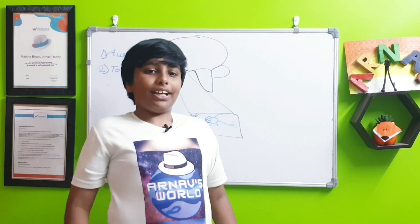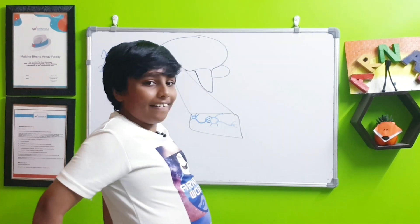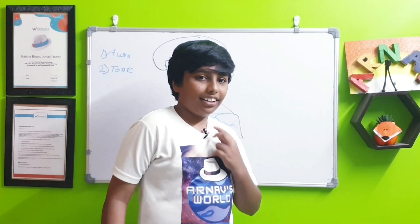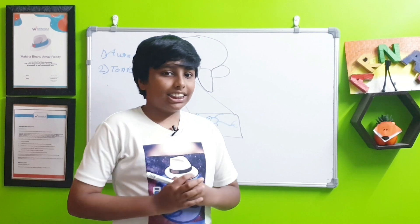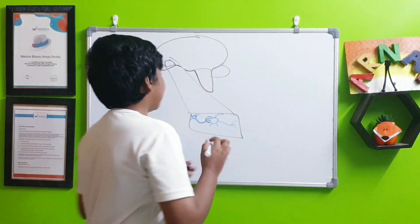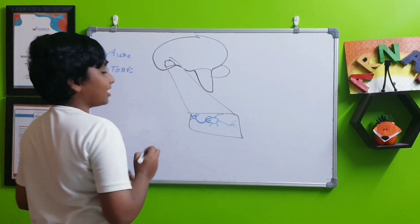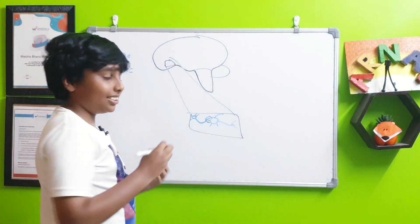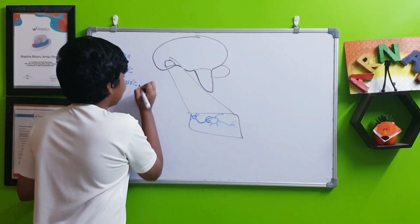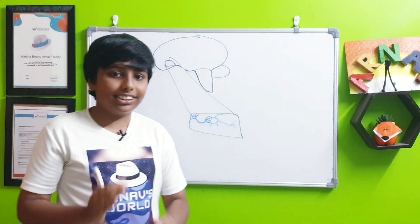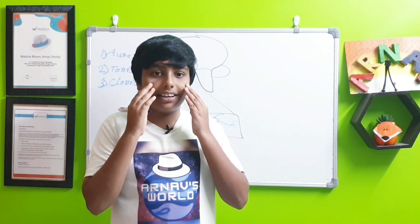After the aura stage, the second stage begins — the tonic stage. You will quickly fall down and go stiff on the floor. This is a bit less dangerous than the third stage, the clonic stage, where you start shaking and your eyes start rapidly blinking.